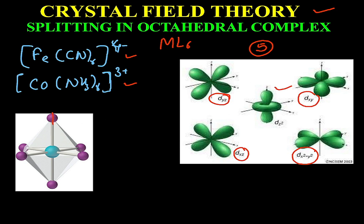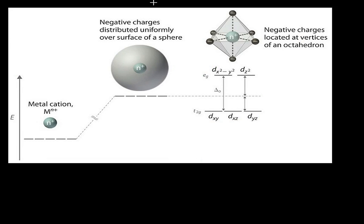In an octahedral complex, the ligands approach from along the axes. Two ligands come from the z axis, while the other four ligands approach from the direction of dx²−y². So the electrons present in these axial orbitals will experience more repulsion compared to the electrons present in the other three orbitals.